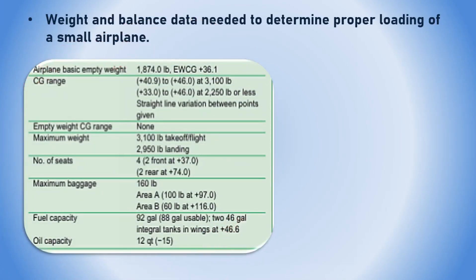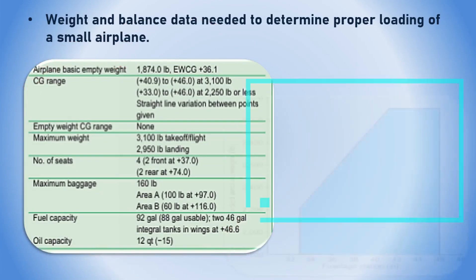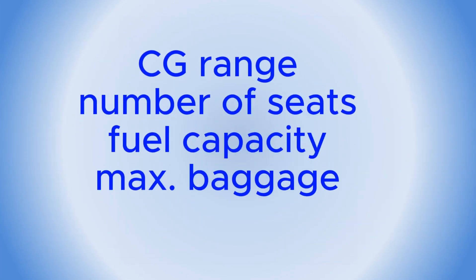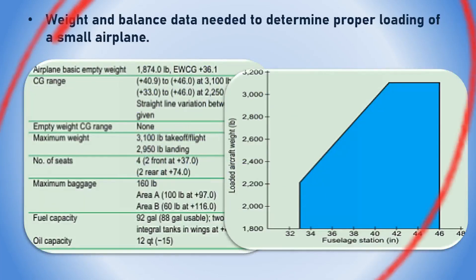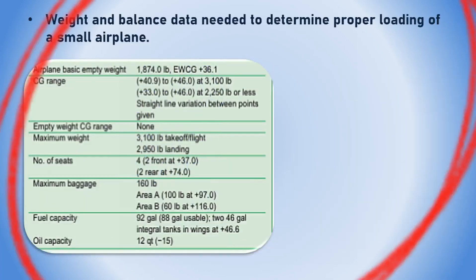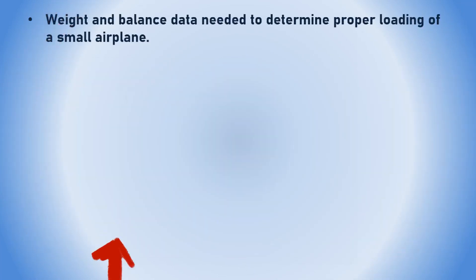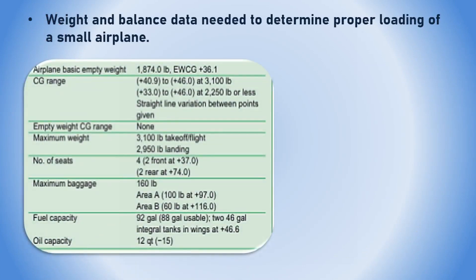So what kind of data do we need to crunch to get this right? We are talking about factors like the center of gravity (CG) range, the number of seats, fuel capacity, maximum baggage, and more.